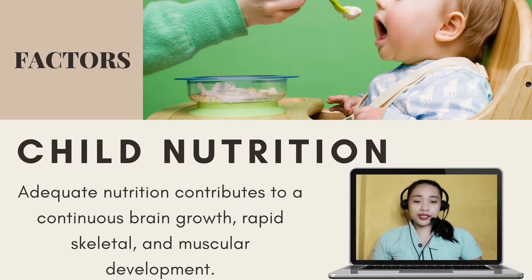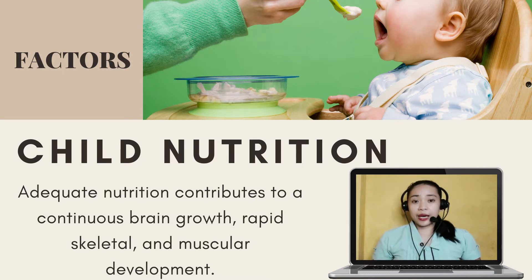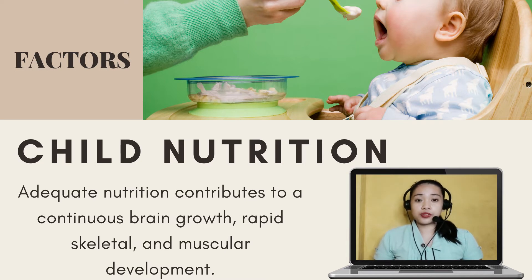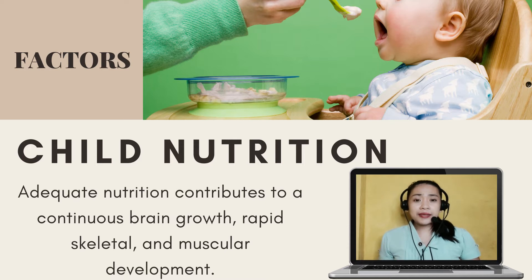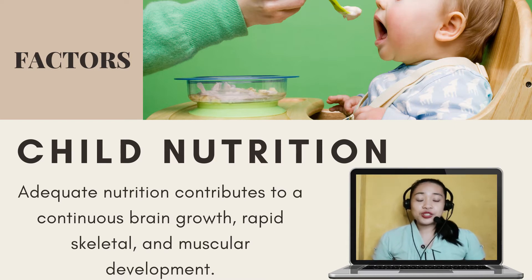The second factor that affects development is child nutrition. Adequate nutrition contributes to continuous brain growth, rapid skeletal and muscular development. It is not the amount of food that the child eats, but what they eat that contributes to healthy living. A healthy diet includes an adequate supply of fruits and vegetables, whole grains, food rich in protein and calcium like meat and dairy products. Colorful foods such as oranges, apples, tomatoes, and green vegetables are not only appealing but also highly nutritious.